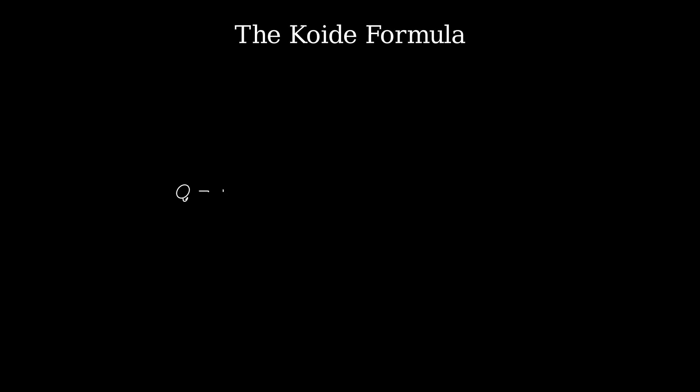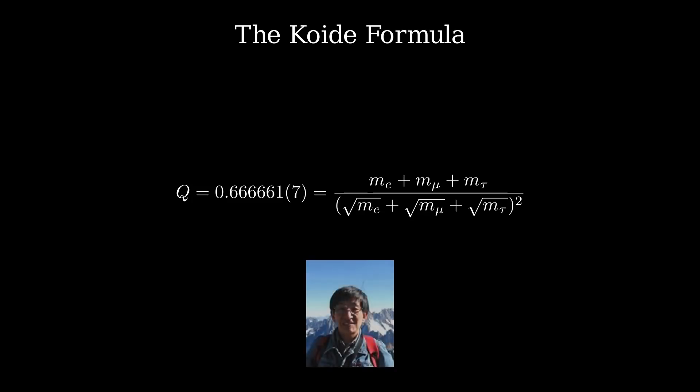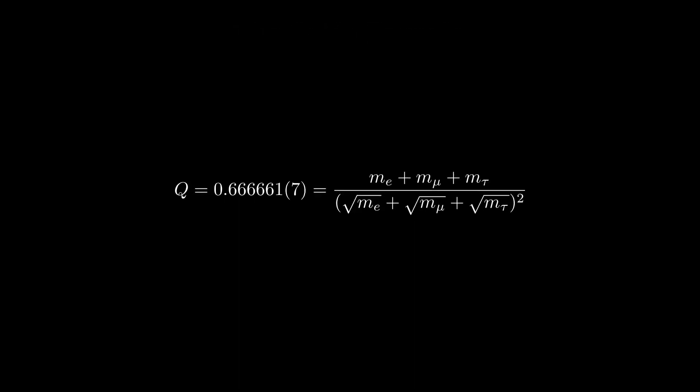The Koide formula, proposed by Japanese physicist Yoshio Koide, is a conjectured mathematical expression that relates the masses of three leptons.